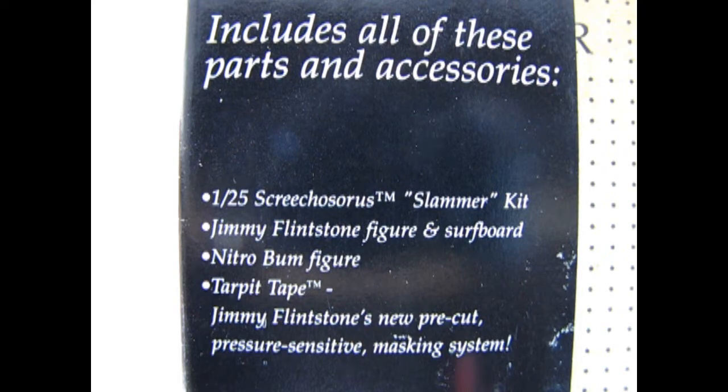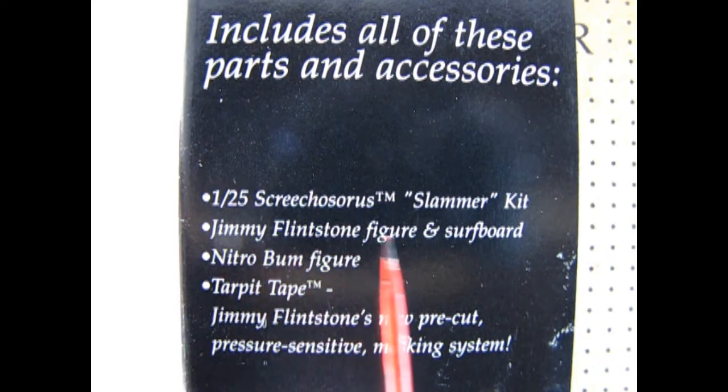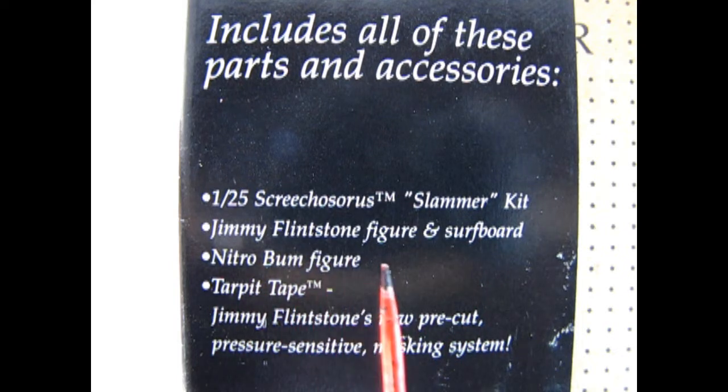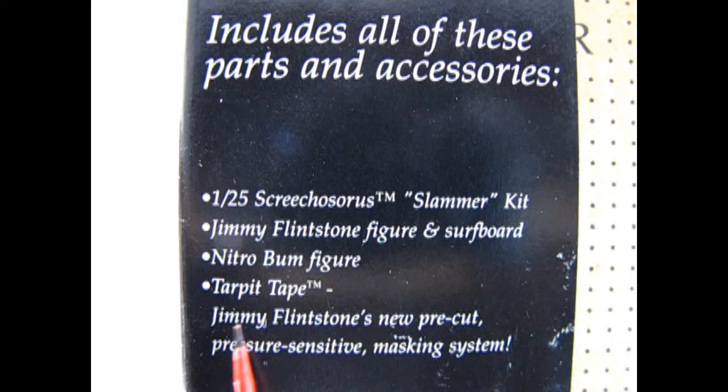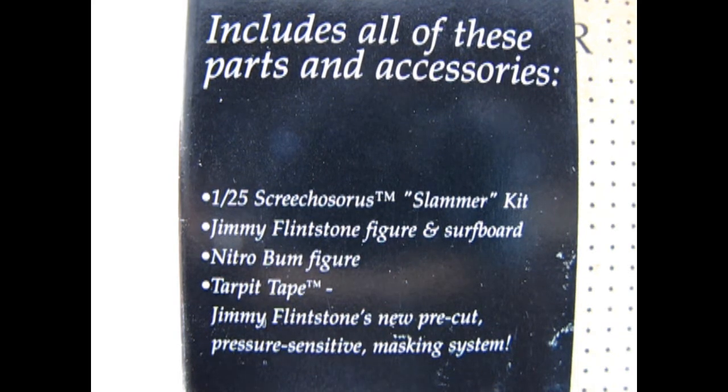On this side of the box we read that it includes all of these parts and accessories. 1:25th scale Screechosaurus slammer kit, Jimmy Flintstone figure and surfboard, Nitro bum figure—that's a little weird alien guy—tar pit tape, Jimmy Flintstone's new pre-cut pressure sensitive masking system.